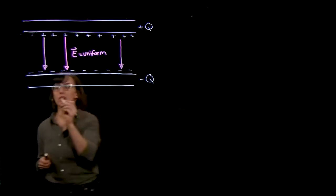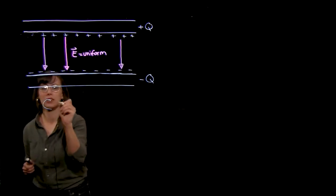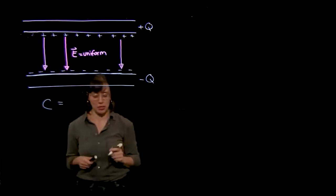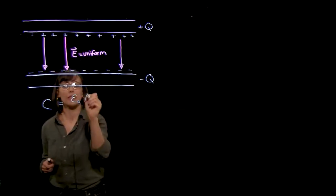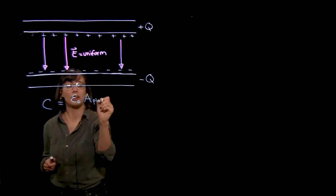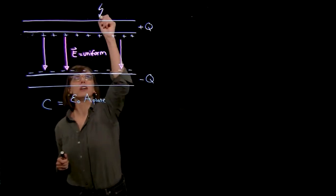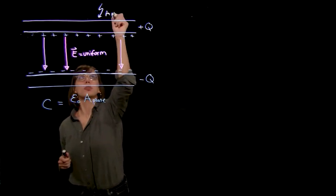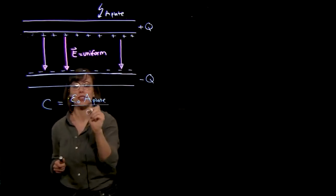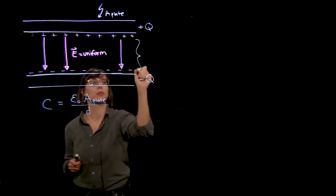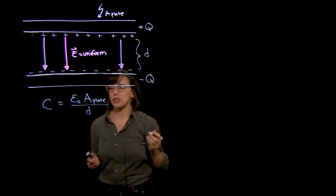Then we saw that we could define this capacitance. And for this particular geometry, the capacitance is equal to epsilon zero times the area of the plate, so this is the area of each plate, divided by the distance between the two plates.